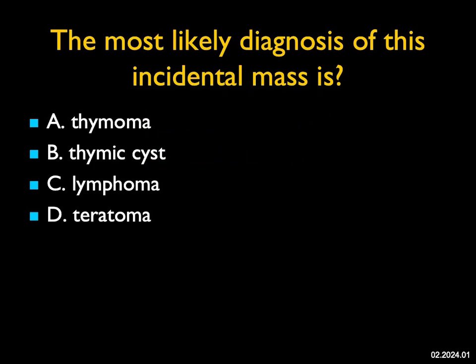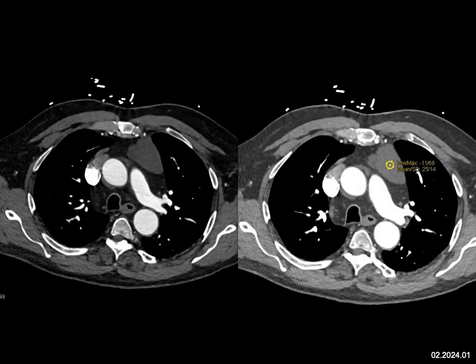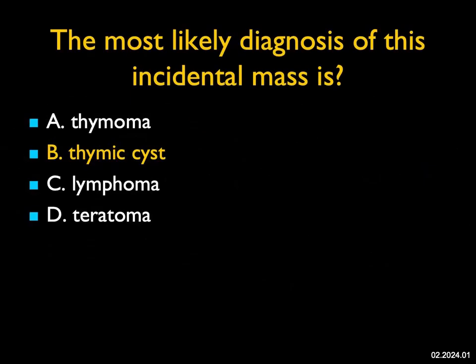The most likely diagnosis of this incidental mass is — what do you see? You see an anterior mediastinal mass. It's water density. Could it be a thymoma? That's a great location, but thymomas are solid. Lymphomas are also solid. Treated lymphoma can become cystic, but there are no other areas of abnormality, for example, in the mediastinum or hilar regions. Teratomas can be cystic, but typically contain some fat, solid components, and calcification. The best diagnosis of a well-defined anterior mediastinal mass, water density, is a thymic cyst.